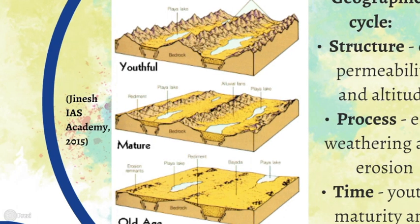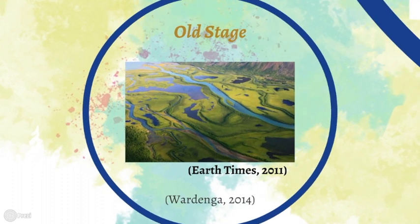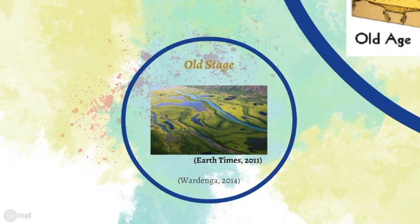Finally, the old stage occurs when equilibrium is established between the sloping inclination and the gradient. Over time, erosion has resulted in a further decrease in steepness on the landscape. In time, the rivers will cut into the landscape, broadening the valleys until only a slightly elevated peneplain remains.